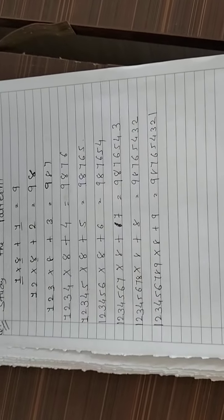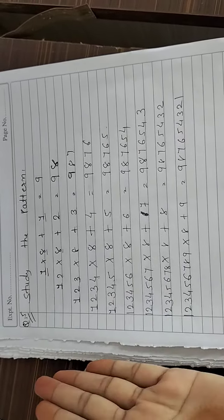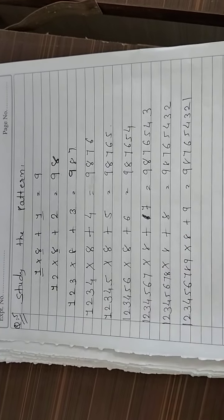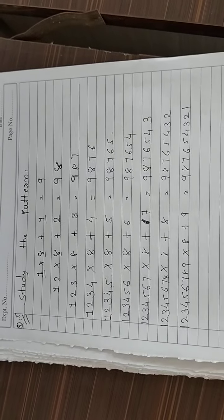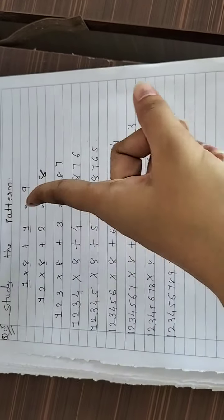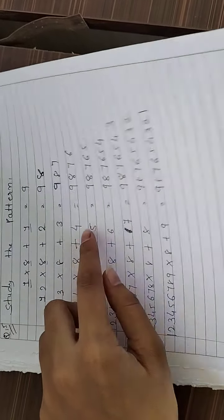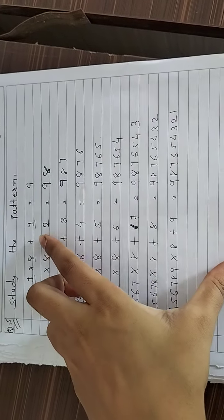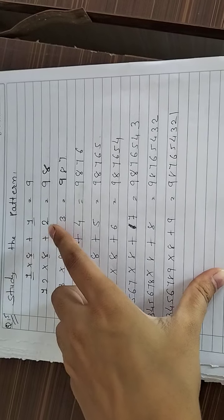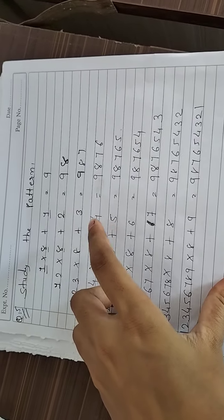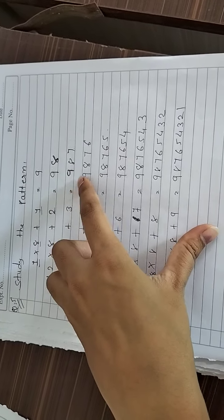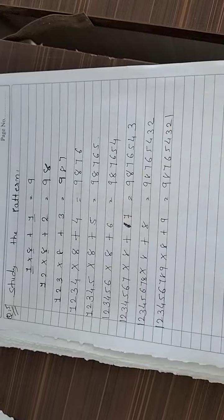Pattern में क्या हो रहा है? 8 remaining रह रहे हैं। जो multiplication number है उसमें 1 by 1 increasing order हो रही है — 1, 2, 3, 4 बढ़ते जाते हैं। Addition में भी 1, 2, 3, 4, 5, 6, 7, 8, 9 — natural numbers add होते जाते हैं। Answer में variation देखो: 9 के बाद 8 आता है — यानी decreasing order दिखाई देती है। समझ में आ गया।